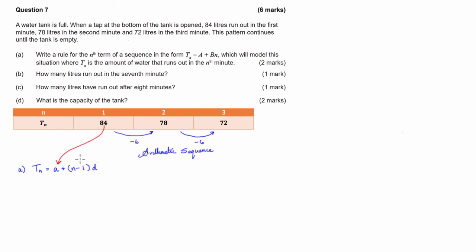So from here, what we can do for part A is substitute in all the numbers we know, and then we're going to simplify it, and hopefully we'll pop out with a formula that looks similar to the one they've given us. So we can start by going t_n equals, rather than writing a, I'm going to write the first term, which is 84, plus (n - 1) times the common difference, which is negative 6.